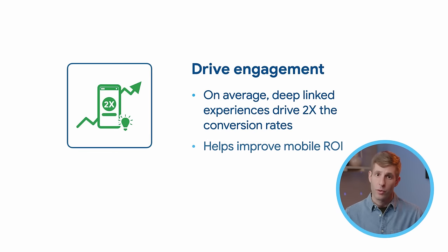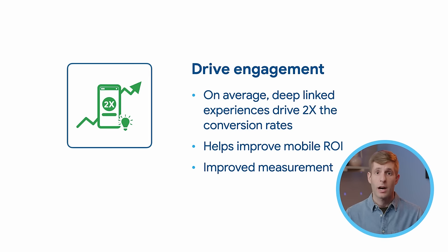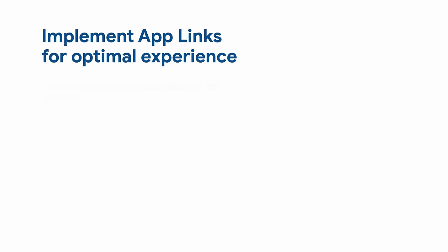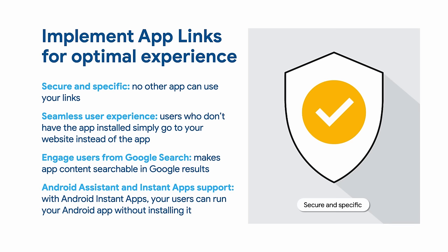And last but not least, deep links drive long-term engagement and boost the ROI you get from your app. We've seen that users who are directed to apps are twice as likely to perform actions as users who are directed to the mobile web versions of the same content. So the ROI is much higher for both you and the users. There are different types of deep links, but for the best experience on Android, we highly recommend implementing the native Android app links. They are more secure and specific because you prove ownership of the domain, so no other app can claim they own the same domain and use your links.